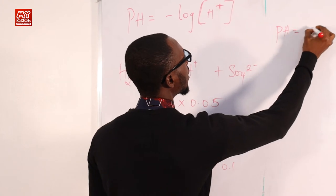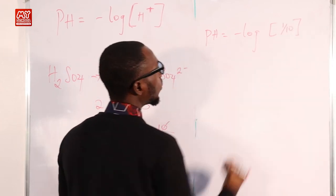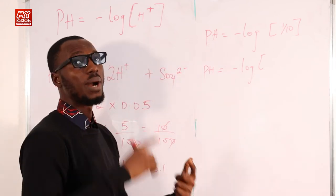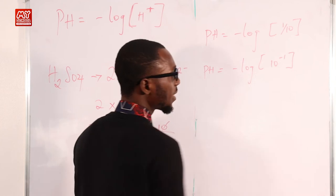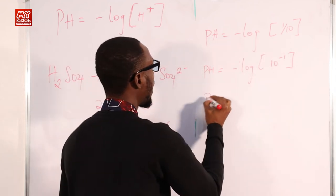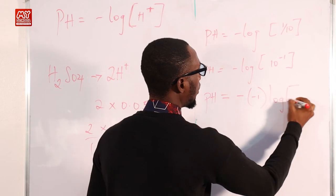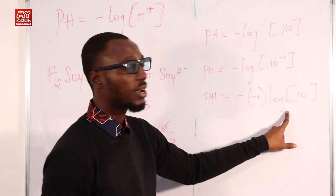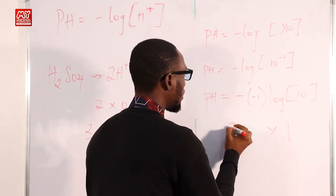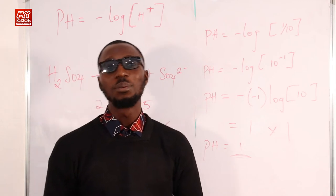pH = −log(0.1) = −log(10⁻¹) = −(−1) × log(10) = 1 × 1 = 1. So pH = 1, and option C is correct.